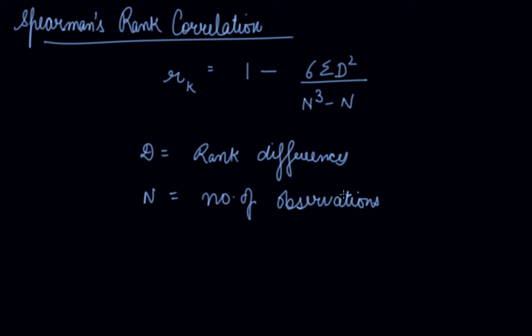Now, in some questions, you will be given the ranks only. The question contains only the ranks. In that case, you just have to find out the difference and count the number of observations and put it in the formula. In some questions, you won't be given ranks. So you have to assign the ranks. Let's take up that question in which you have to assign the ranks.